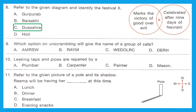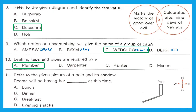Question 9: Which option on unscrambling will give the name of a group of cats? A group of cats is called a clouder. Option A gives 'swamp', B gives 'army', C gives 'clouder', D gives 'herd'. The right answer is option C. Question 10: Leaking taps and pipes are repaired by a plumber. Option A.